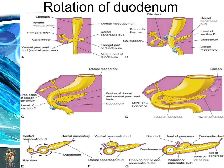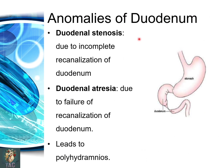Here you can see the fusion of both parts. The anomalies of the duodenum include: duodenal stenosis due to incomplete re-canalization, and duodenal atresia due to failure of re-canalization of the duodenum to occur. In both of these anomalies, the clinical sign will be polyhydramnios, because the fetus cannot swallow amniotic fluid due to the stenosis or atresia, causing fluid to accumulate in the amniotic cavity.